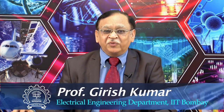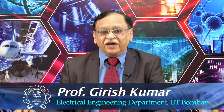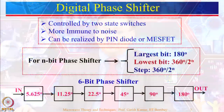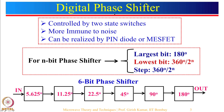Hello. In the last lecture we discussed about phase shifters and briefly talked about analog phase shifters, which can generally be realized using varactor diodes controlled by voltage. We also briefly looked at digital phase shifters: for an n-bit phase shifter, the largest bit is 180 degrees, the lowest bit is 360 degrees divided by 2 to the power n, and each step is given by 360 degrees divided by 2 to the power n. Then we took an example of a 6-bit phase shifter.